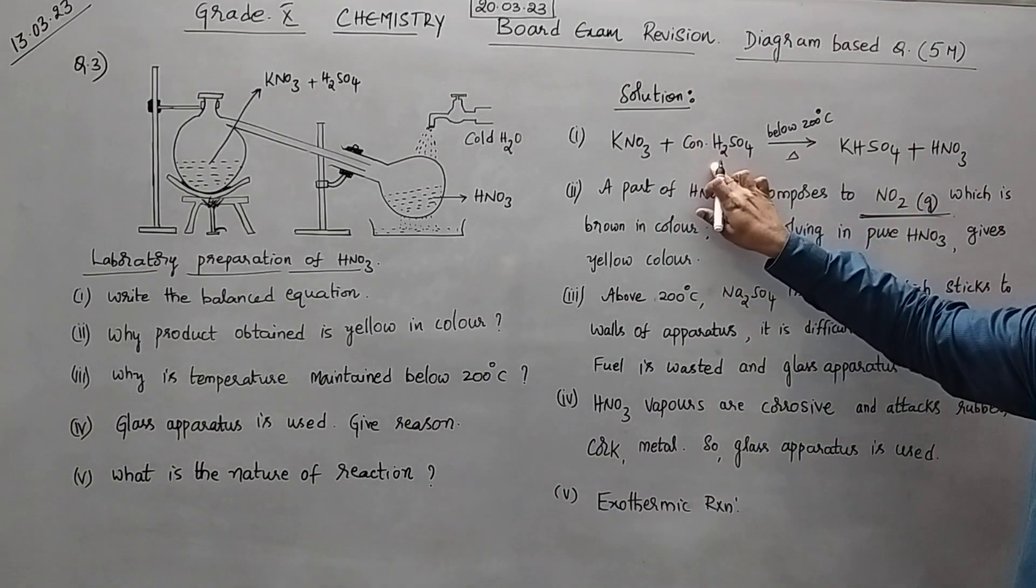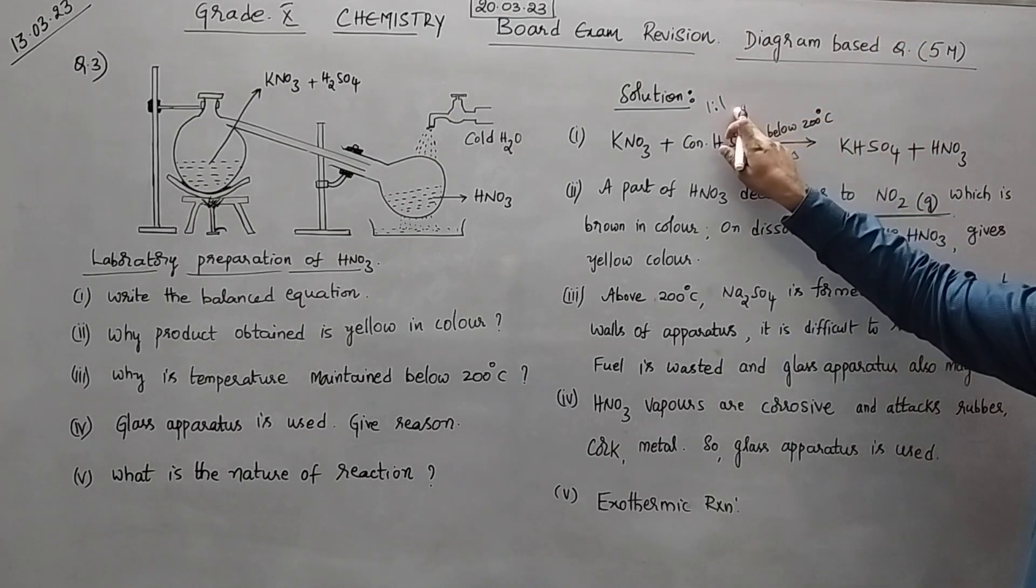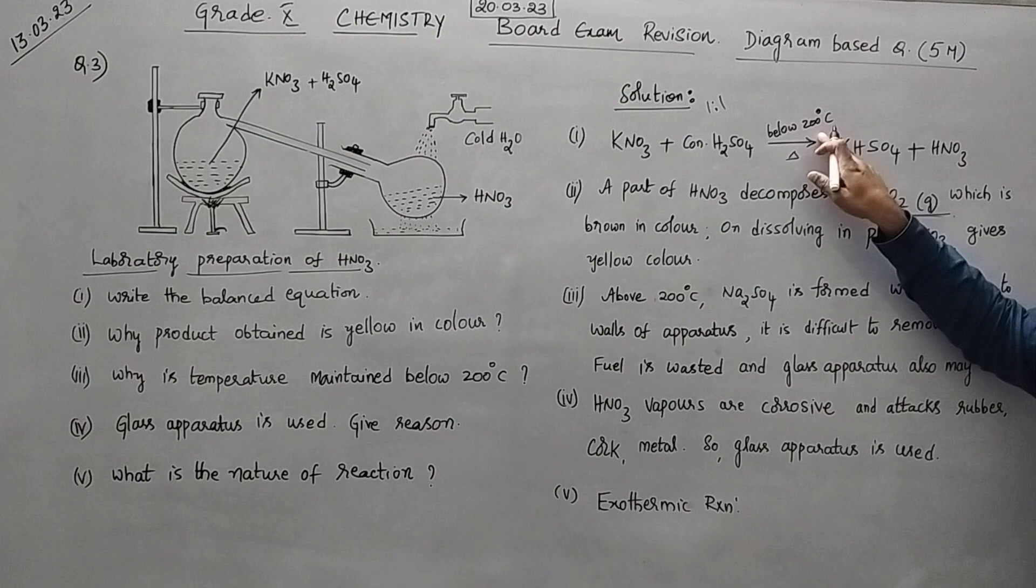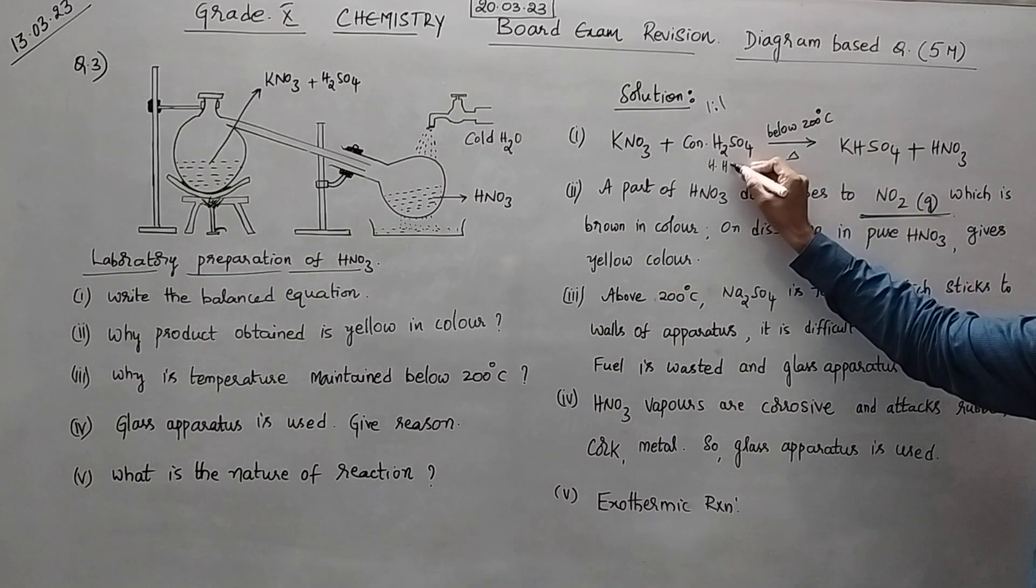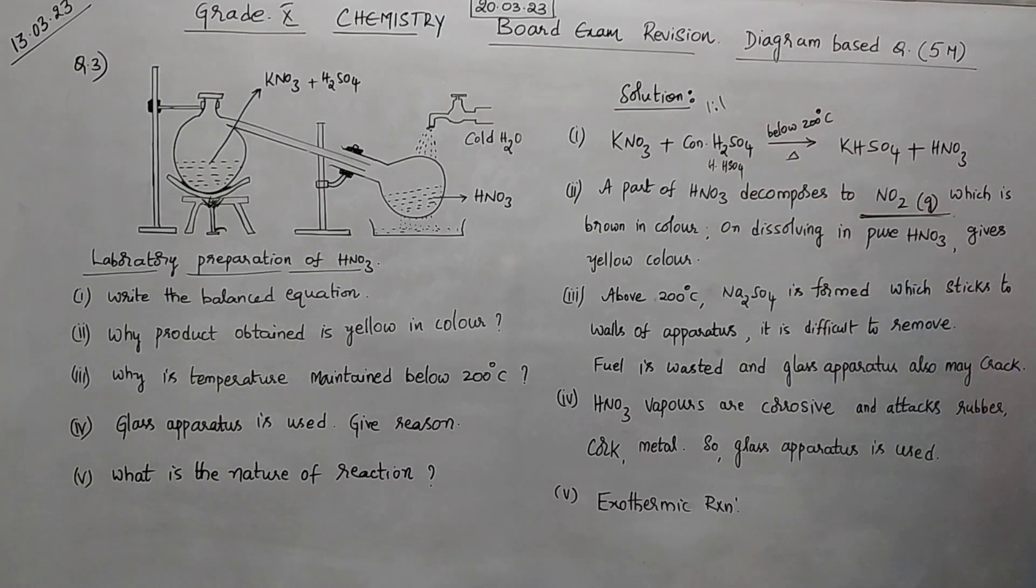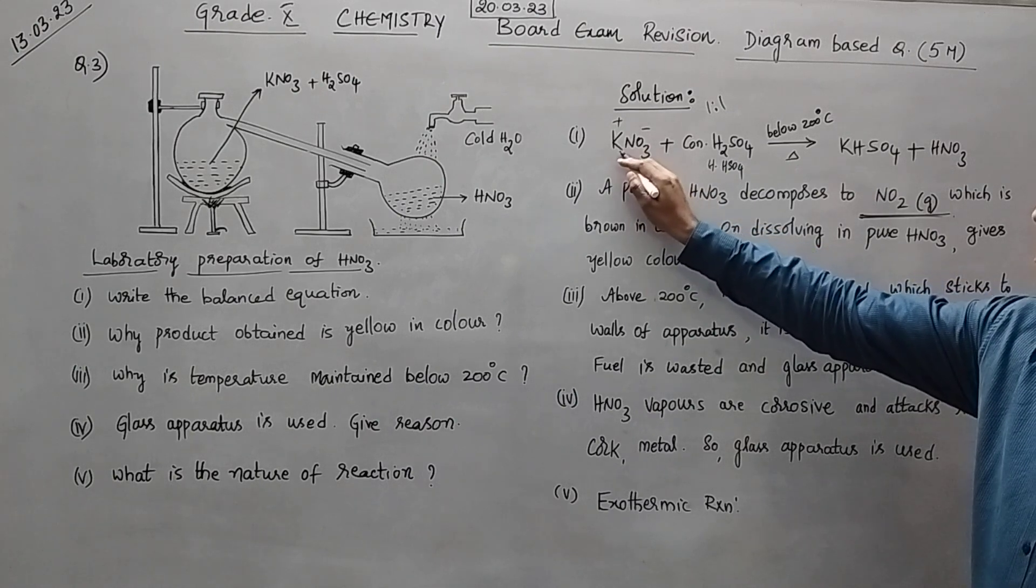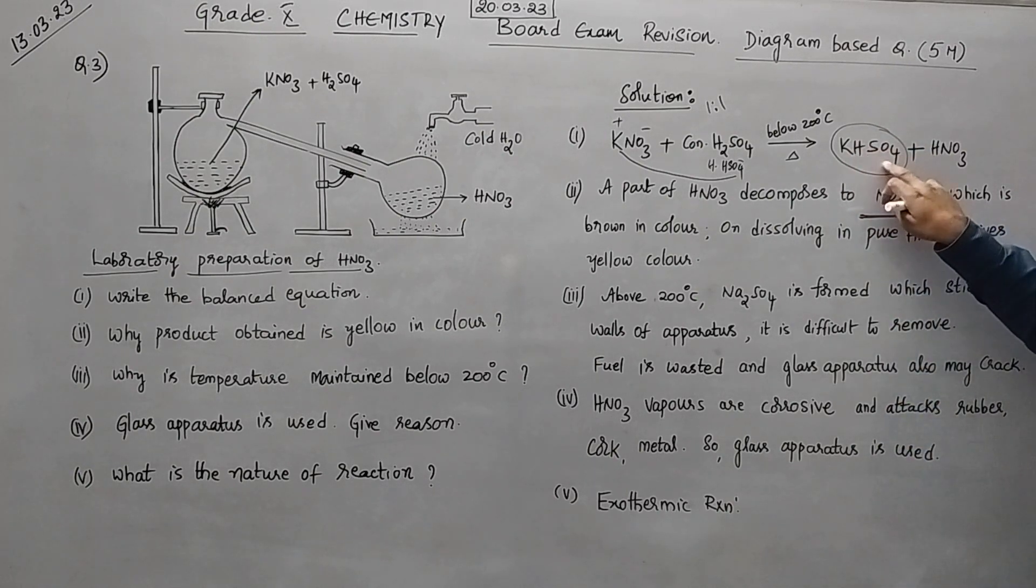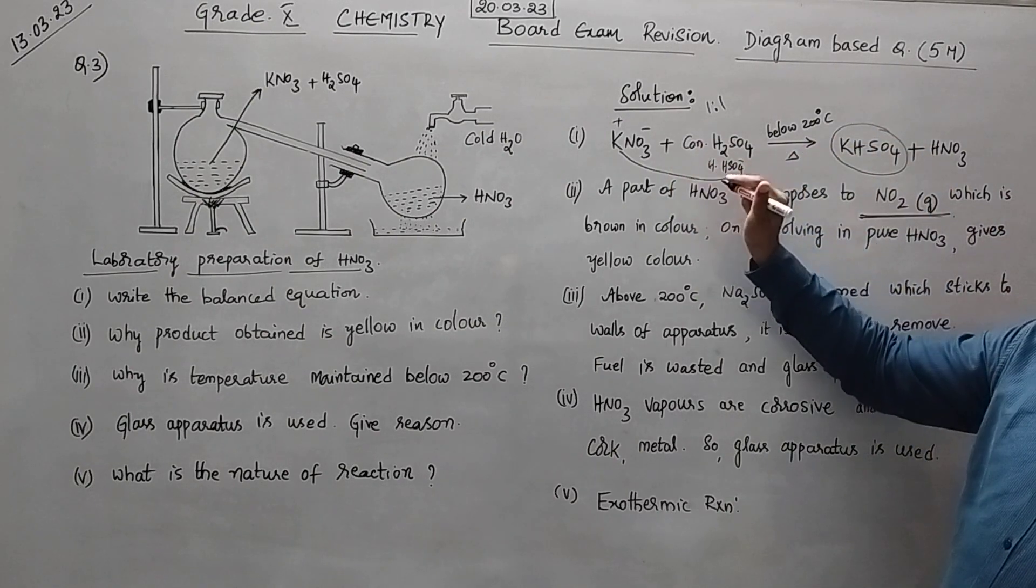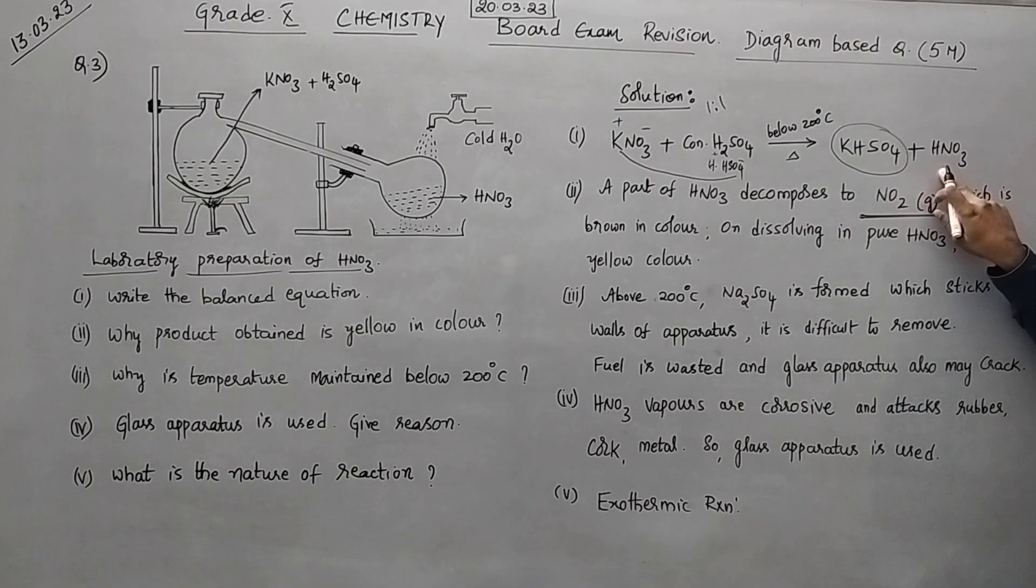Now first one. See KNO3 and concentrated H2SO4 very important. The ratio is 1 is to 1 and you have to heat below 200 degrees Celsius. And now what happens, we can write it as H and HSO4, and here NO3 minus and K plus. So K plus and HSO4 minus will form KHSO4, that is potassium hydrogen sulphate. And what is left out here? H plus and NO3 minus will form HNO3 which is nitric acid.